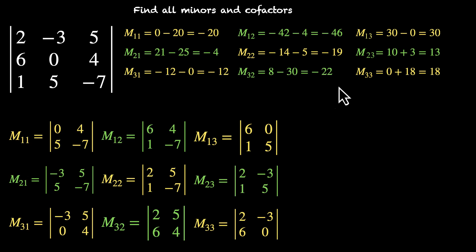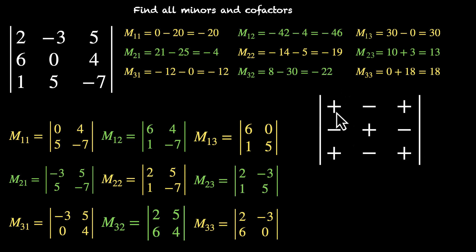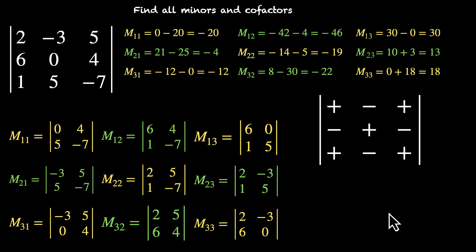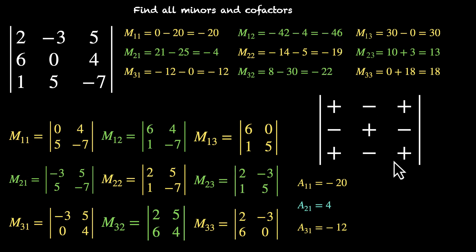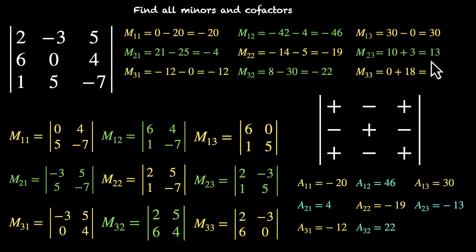So we have these nine minors. Now let's find cofactors. For that we need the sign pattern: plus, minus, plus, minus, plus, minus, plus, minus, plus. The signs change for minors minus 46, minus 4, minus 22, and 13 — the ones that have a negative sign in the pattern. Flipping the signs for those four: A11 is minus 20, minus 4 becomes 4, minus 12 stays, minus 46 becomes 46, minus 19 stays minus 19, minus 22 becomes 22, 30 stays, 13 becomes minus 13, and 18 stays 18. So these are our nine cofactors.